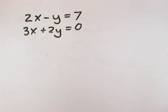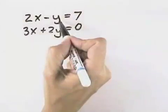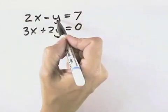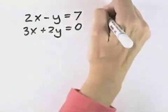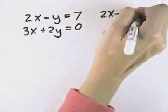We want to solve this system by substitution. That means we need to get, in one of our equations, one of our variables by itself. It looks like getting y isolated in the first equation will be the fewest steps. So to get y by itself, I might add y to both sides and subtract 7. So I have 2x minus 7 equals y.